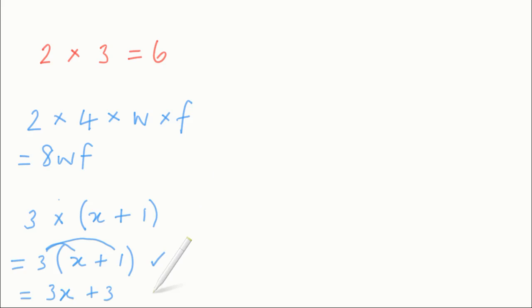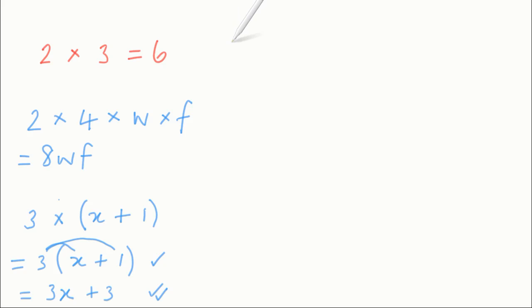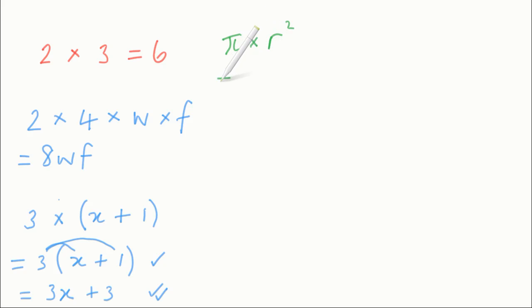Both of those answers are the product — it's just that the expanded final answer is probably what you'd be expected to write at school. You can also have the product of other things, like the product of pi and r squared. It's the answer you get when you multiply pi and r squared together, and you would just write that as pi r squared. So that's all the product means: the answer you get when you multiply two or more things together.